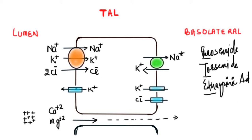Before we take on the mechanism of action of the loop diuretics, let's look at the site of action and what is the normal physiology occurring at that site. The site of action of the loop diuretics is the thick ascending limb of the loop of Henle.